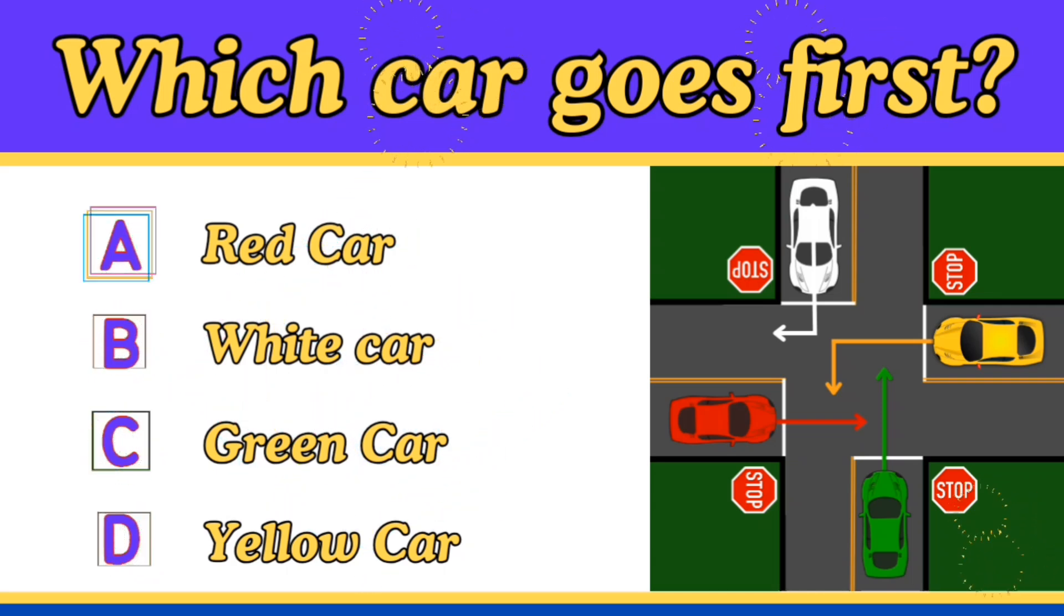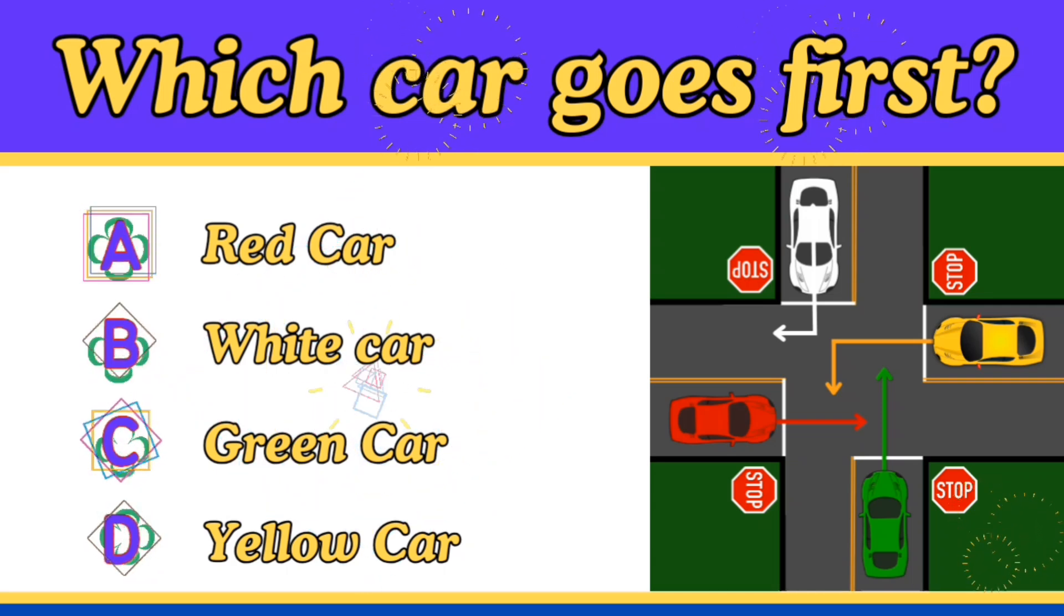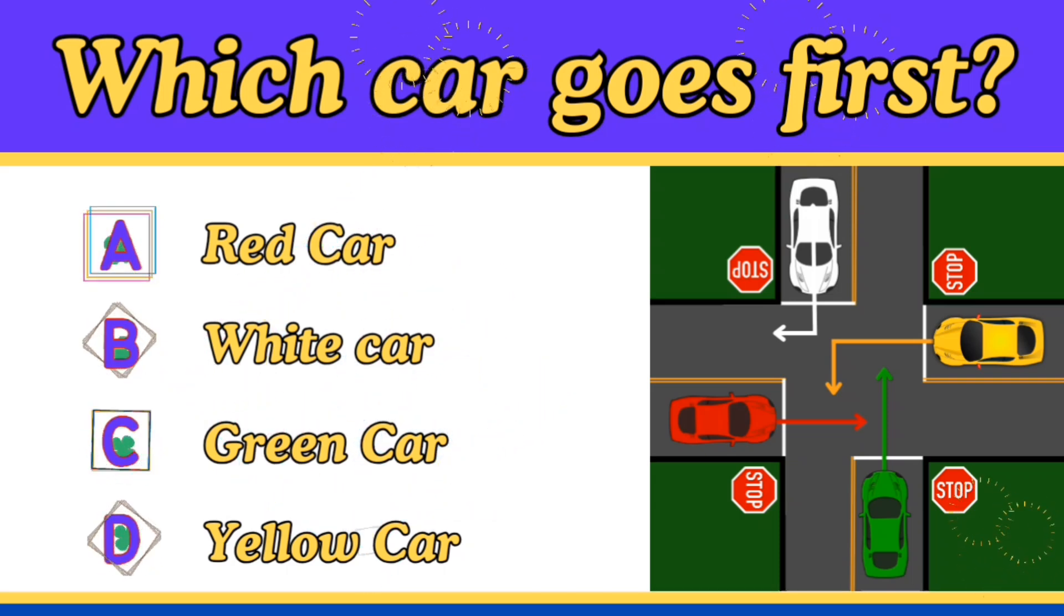So, the red car will be the one to go second, followed by the yellow car. And finally, the green car will be the last car to cross this intersection.